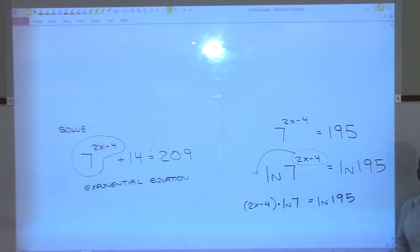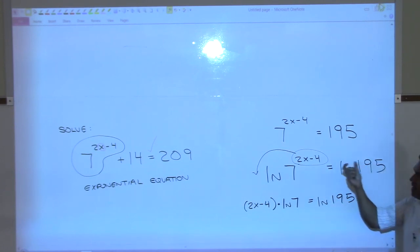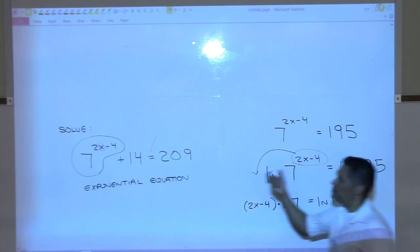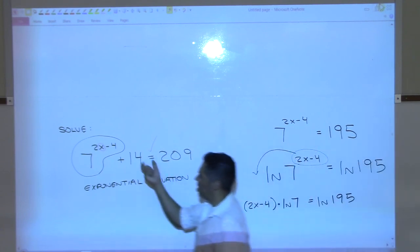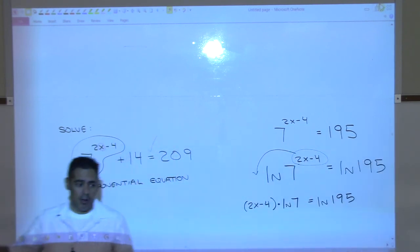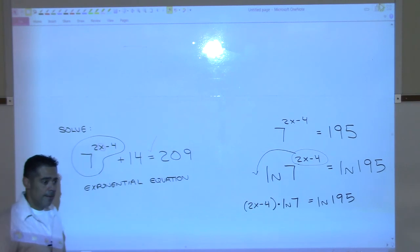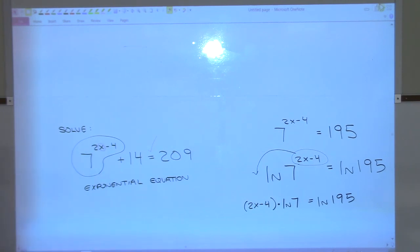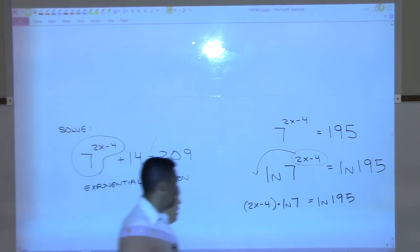The property of logarithms says that the exponent can now drop out in front of the natural log — that was a property from last class. So out in front now we have (2x − 4), and that sits times natural log of 7, and that must equal natural log of 195. We've taken the variable out of the exponent — it's no longer up there, and that's a good thing. The rest of this is just calculator work.